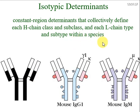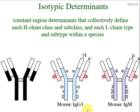The constant region determinants — heavy chain classes and subclasses as well as light chain types and subtypes — are defined within a species: in humans, mouse, rabbit, or monkey. Isotypic determinants will be the same within a species. For example, IgG1 and IgM molecules will have different isotypic determinants, so each class and type within a species will have different isotypic determinants.